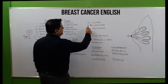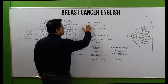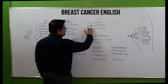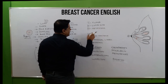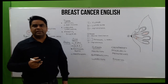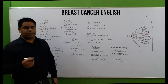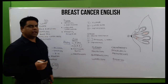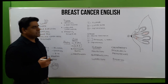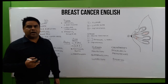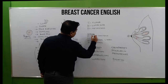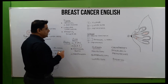In the TNM staging system: T stands for tumor — assessment of tumor size by mammography or CT scan; N stands for lymph node involvement; M stands for metastasis — how much metastasis has occurred. Early detection depends on these parameters: tumor size, lymph nodes, and metastasis.